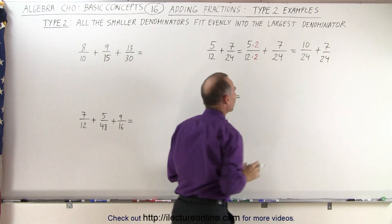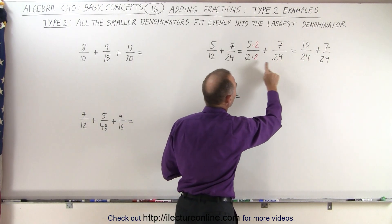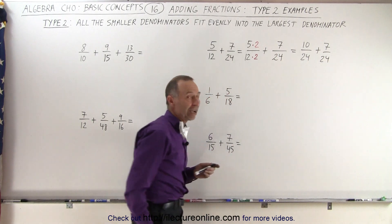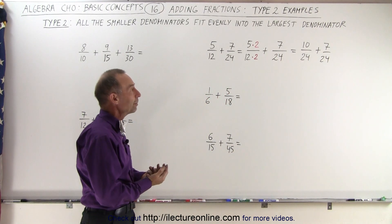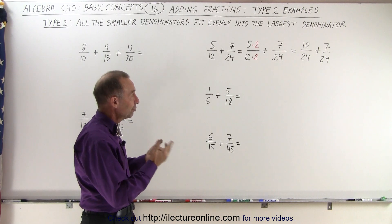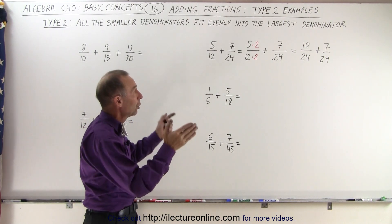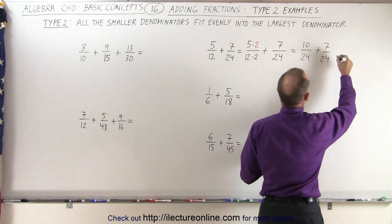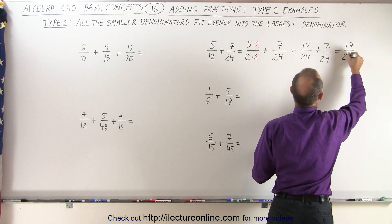All I've done is rewritten the first fraction so that it now has the same denominator as the second fraction. Now they have common denominators, so we simply do what we did before: if two fractions are added and they have the same common denominator, we simply add the numerators. So in this case, this would be 17 over 24.